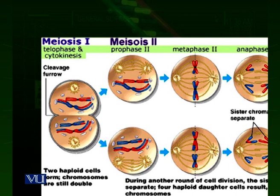After the end of prophase II, metaphase II starts. In metaphase II, the chromosomes arrange themselves on the equatorial plate. They are duplicated, and each sister chromatid is attached to spindle fibers with the help of separate kinetochores, like in mitosis. This is observable in both cells — they are arranged on the equatorial plate with each sister chromatid separately attached to a spindle fiber.